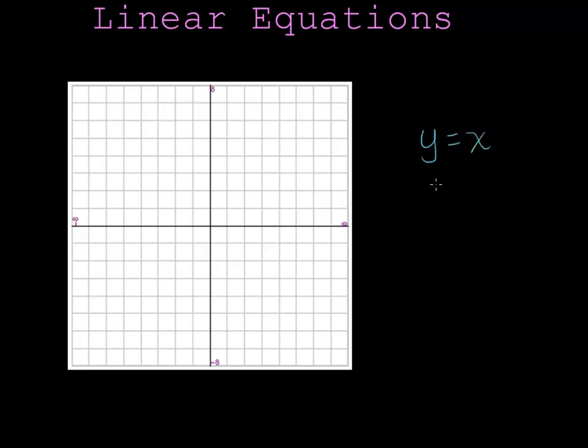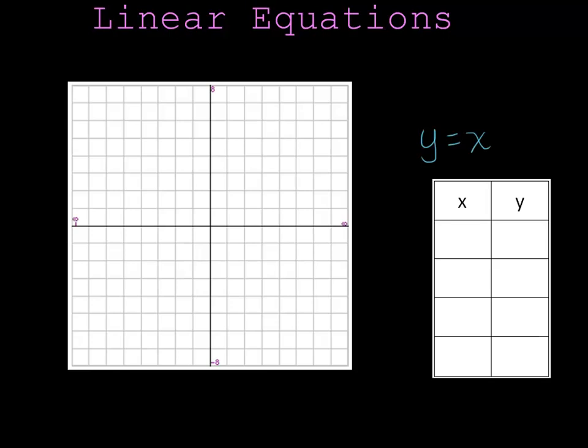And to begin, one thing that you can always do is create a function table. I'll pick some values for x and then compute the values for y. So let's start off with x is equal to 0. That's always a good point to pick. Well, if x is 0, then y is 0. You see why this is the easiest one? And if x is 1, then y is 1. And if x is 2, then y is 2.